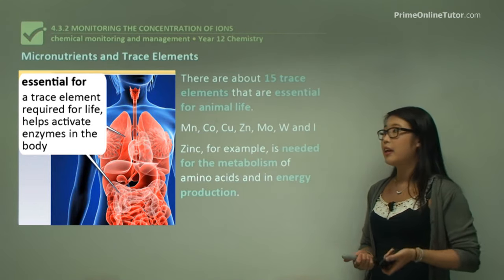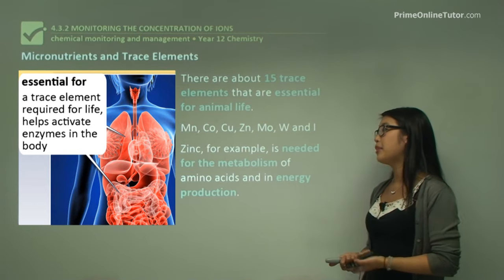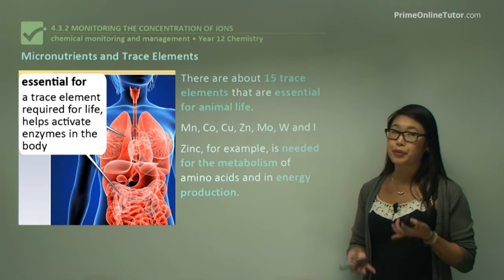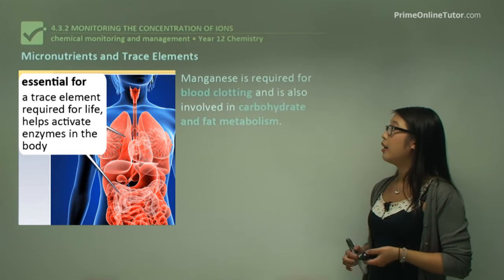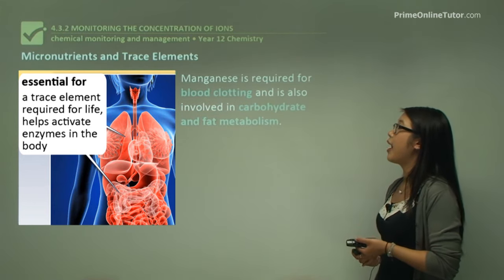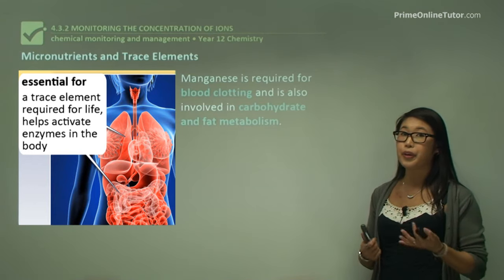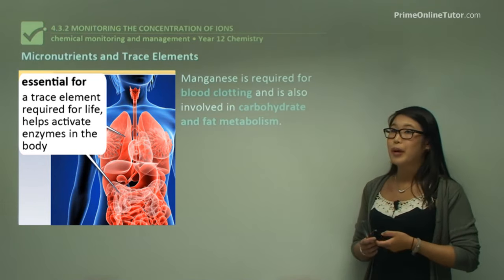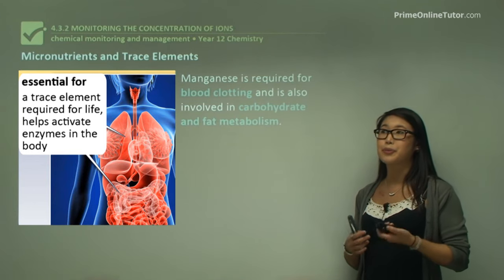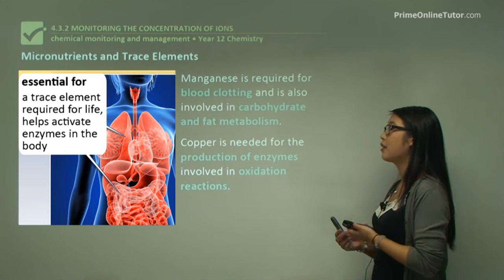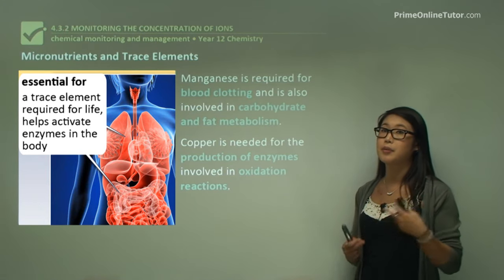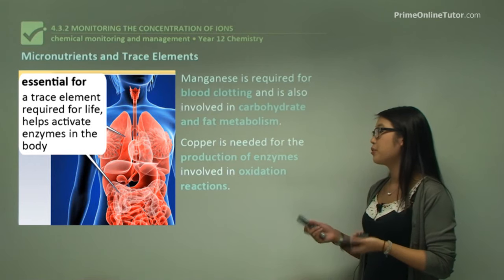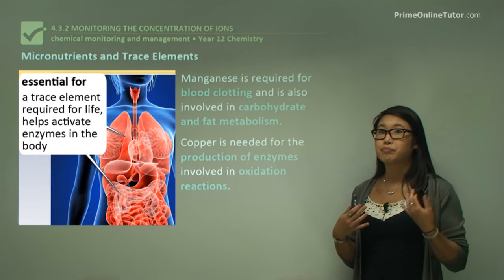Looking at some examples: zinc is really important for the metabolism of amino acids in the body and for energy production — it's used to make glucose. Manganese is important in blood clotting; without it we'd just keep bleeding. It's also involved in carbohydrate and fat metabolism, another way to produce glucose. Copper is needed for the production of enzymes that convert fat to glucose, and it's also involved in oxidation reactions, which is essentially breathing.